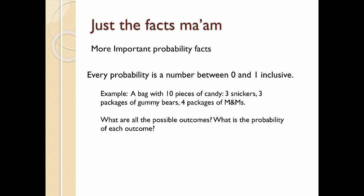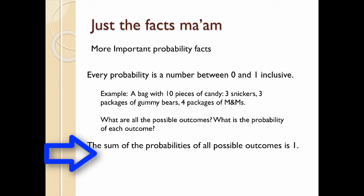More important facts, every probability is a number between zero and one. They're all fractions. Here's an example. A bag with 10 pieces of candy, three Snickers, three packages of gummy bears, four packages of M&Ms. What are all the possible outcomes? And what is the probability of each outcome? The sum of the probabilities of all possible outcomes, as long as they're equally likely, is one.